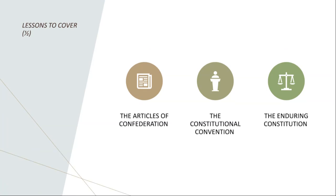The Articles of Confederation — don't confuse this with the Constitution. Both have many similarities. You can think of the Articles of Confederation as a primitive form of the Constitution that we know today. It served as the first attempt at a national government for the newly independent United States. Adopted in 1777 and ratified in 1781, these Articles established a loose confederation — meaning a unity — of sovereign states.